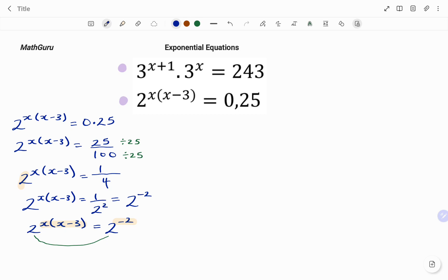So therefore, equating the powers, I have x, bracket, x minus 3, equals to negative 2. Please don't forget to click on the like and subscribe button below for more easy-to-understand math concepts.